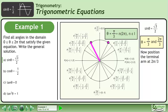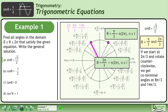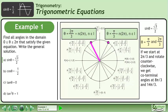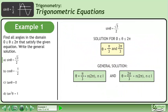Now position the terminal arm at 2 pi over 3. If we start at 2 pi over 3 and rotate counterclockwise, we get coterminal angles at 8 pi over 3 and 14 pi over 3. The second part of the general solution is theta equals 2 pi over 3 plus n times 2 pi, where n belongs to the set of integers. We have now found the specific solution for the domain where theta is between 0 and 2 pi and the general solution for all real numbers.